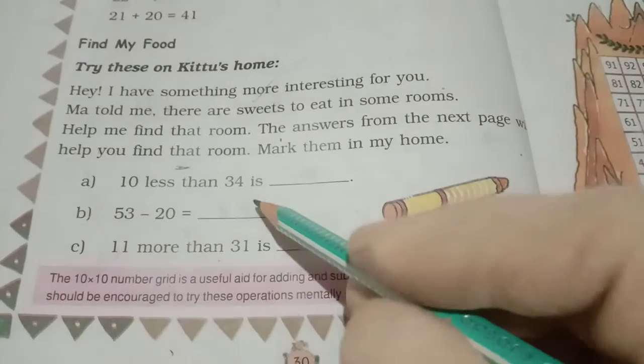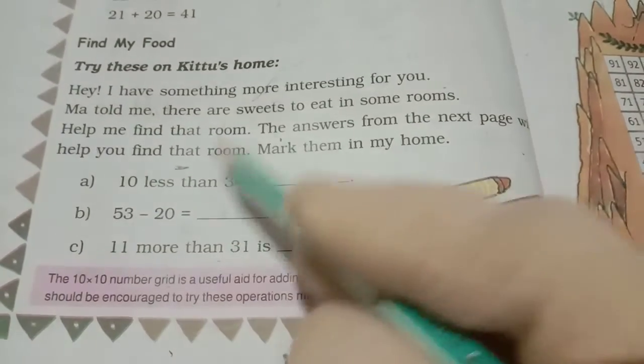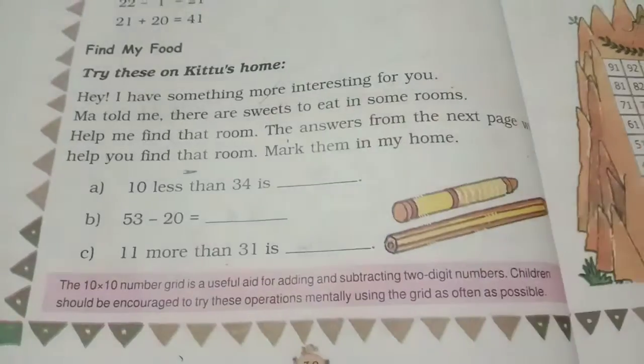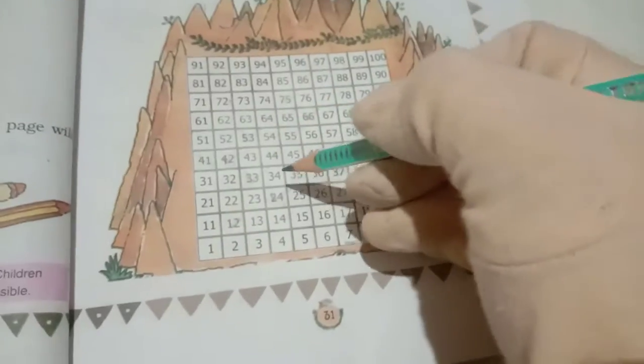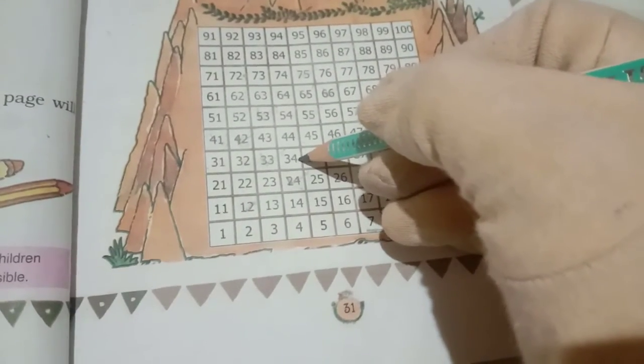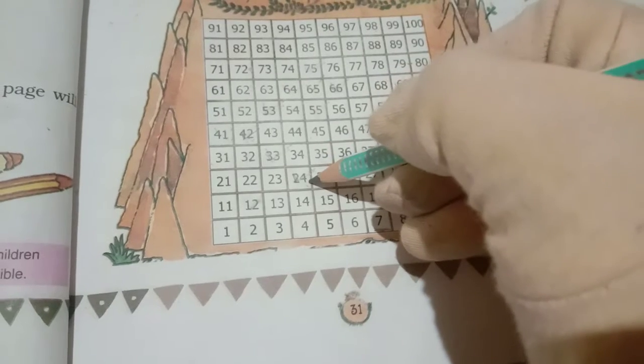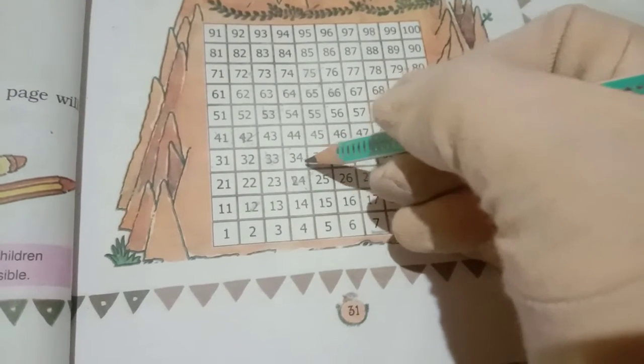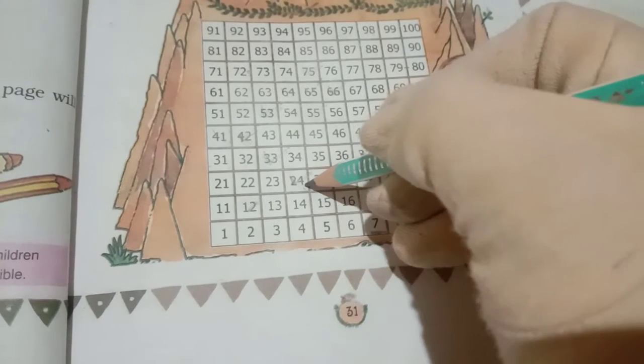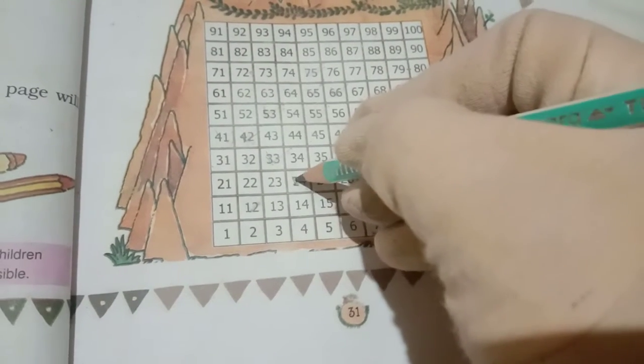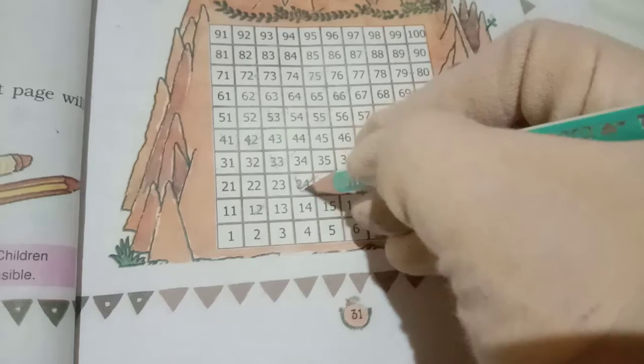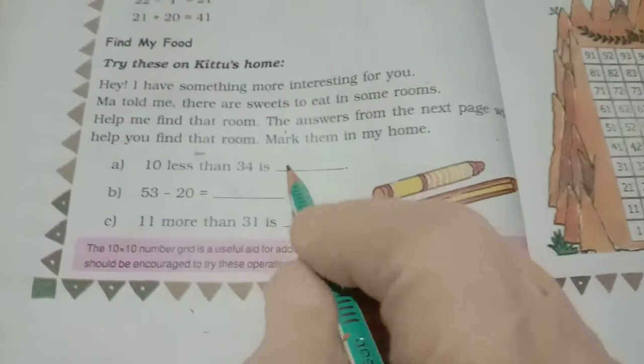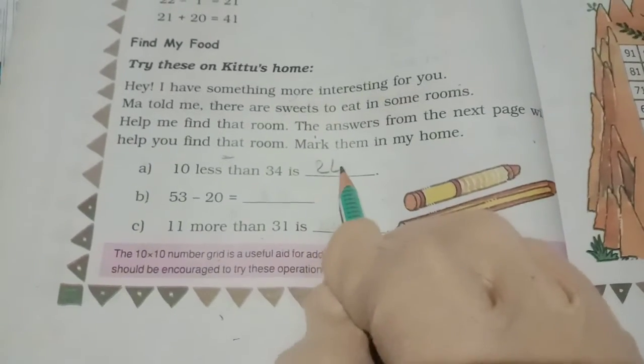Question number one, 10 less than 34. Less than means minus, 34 minus 10. So we have to see here 34, 34 is given in here. Less means go to downside. 34 we have to go 1 step down. So answer will get 24. So we have to tick mark number 24 and write in here number 24.